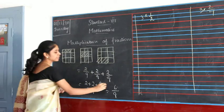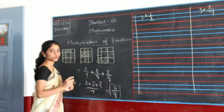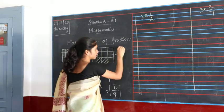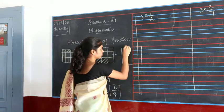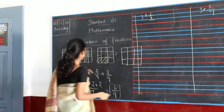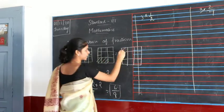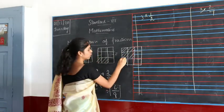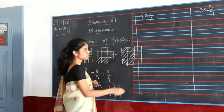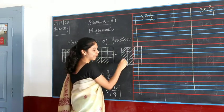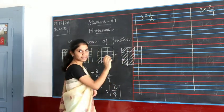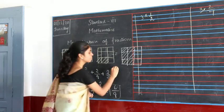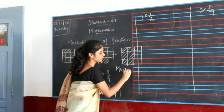In mathematical expression you get 6 by 9. In the diagrammatic representation, here 2 parts are shaded, here 2 are shaded, and here 2 are shaded. So 1, 2, 3, 4, 5, 6 out of 9 is shaded. This is how you get multiplication of fractions.